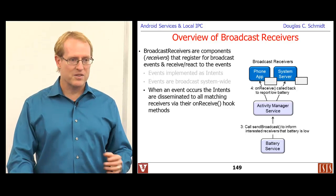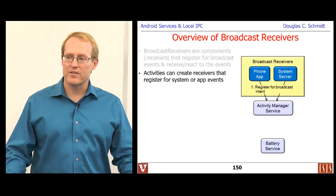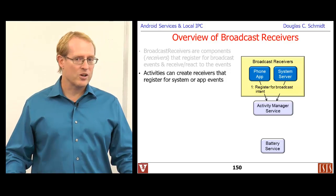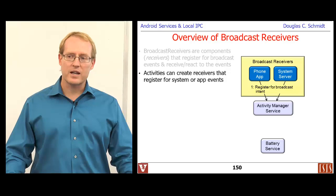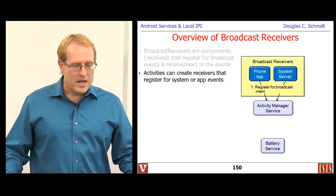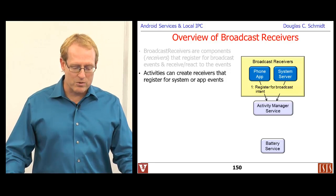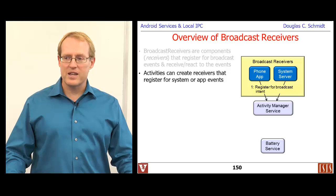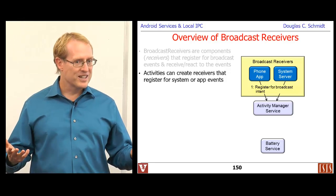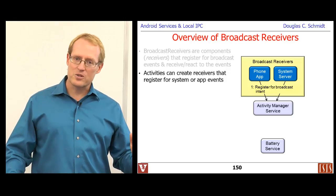There are a bunch of limitations placed on what you can actually do inside an onReceive method — you can't do everything because of the context in which it runs. Notice that you can have multiple receivers for a given event. Depending on how the events are sent, they may all receive the intents asynchronously, or they may receive them synchronously one at a time via ordered broadcasting. Typically, activities create receivers that register with the Activity Manager Service through a context method called registerReceiver.